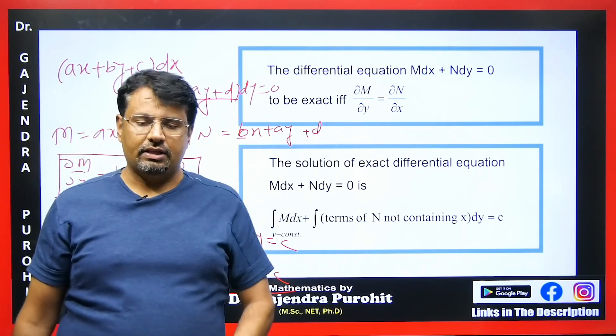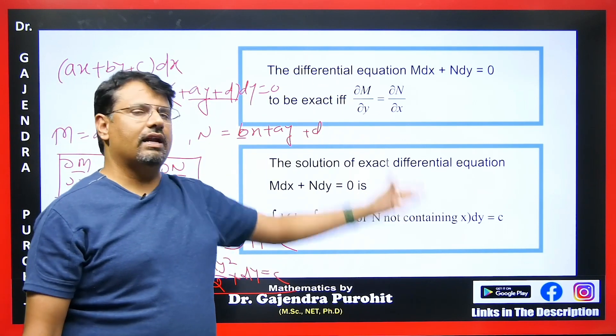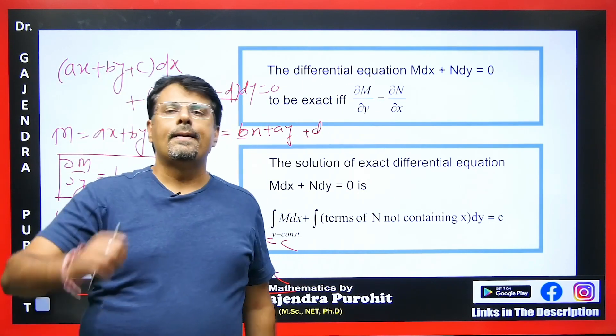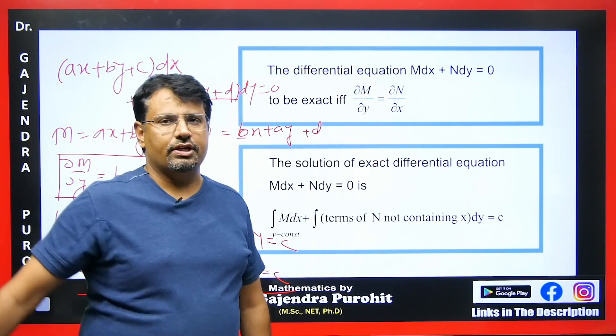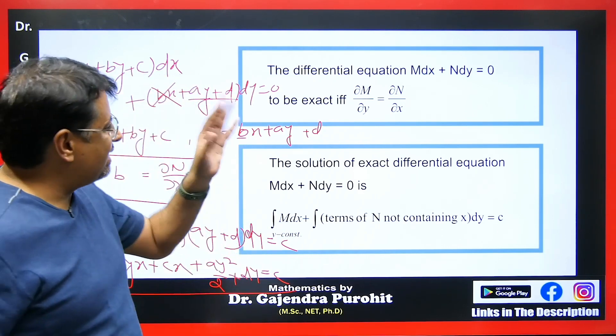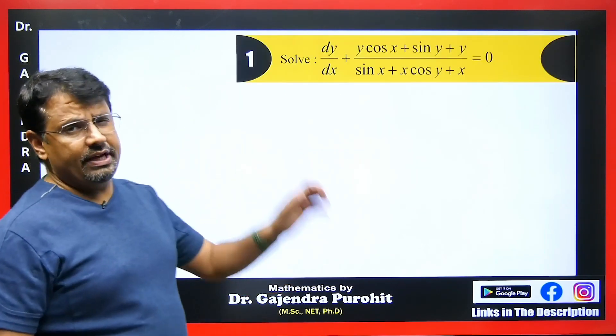One condition must always be fulfilled: del M by del y should equal del N by del x. I will show you some questions so that you understand this better.